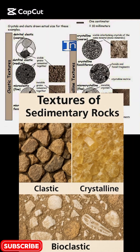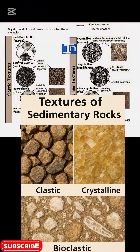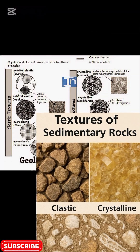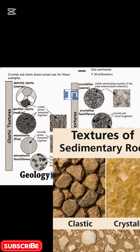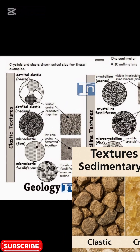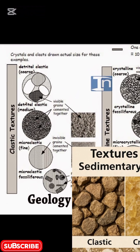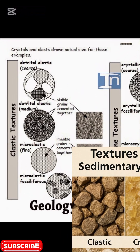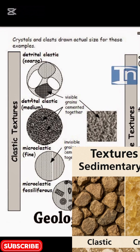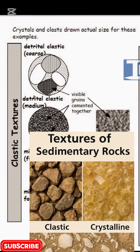Sedimentary Rocks Textures and Its Structures. Sedimentary rocks have three primary textures. The first category is clastic or detrital texture, formed from fragments of pre-existing rock — examples include sandstone, shale, and conglomerate.